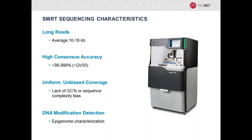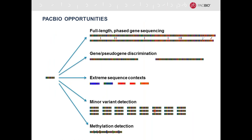All of these characteristics allow the interrogation of regions that were previously impossible. There are many opportunities for PacBio to go beyond the 150 or so bases you have with short-read sequencing to enable routinely in the clinical setting important applications: full-length phased gene sequencing where variants are called for both alleles—maternal and paternal—and phased in their entirety; gene-pseudogene discrimination; access to extreme sequence contexts such as very GC-rich or AT-rich regions; minor variant detection; and methylation detection.